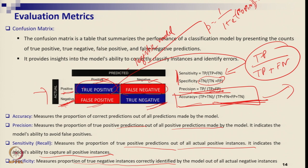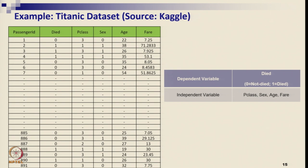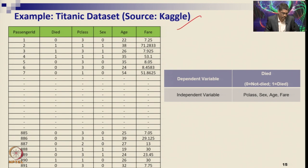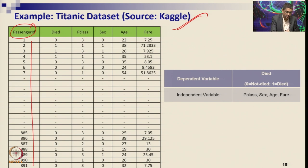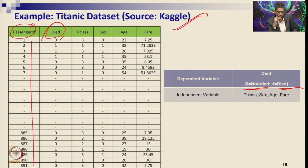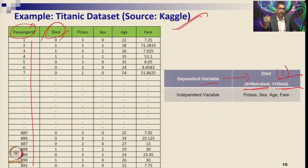We have taken the Titanic dataset from Kaggle with 891 samples. The dependent variable is death — 1 means died, 0 means survived. Independent variables include passenger class, sex, age, and fare. We aim to predict whether a person died or not using logistic regression, and the encoding can also be flipped to survived or not survived — here we use 1 = died.